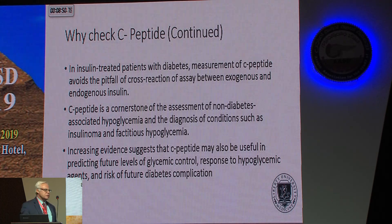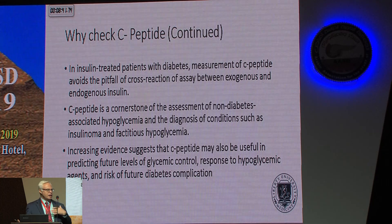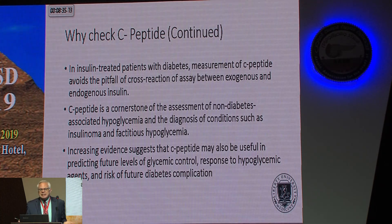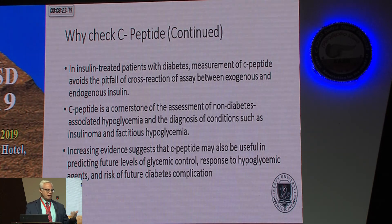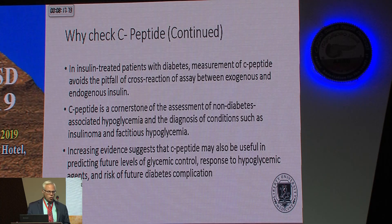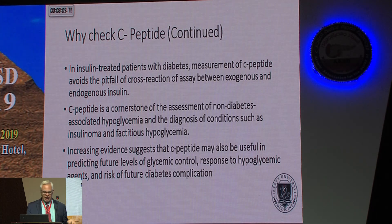In insulin-treated patients, if you're giving them insulin and you measure insulin levels, you can't tell if it's the injected insulin or natural insulin. You can measure C-peptide to differentiate endogenous from exogenous insulin. We can also check this when someone has hypoglycemia — is it because they have an insulinoma, or are they giving themselves insulin to fake it? With an insulinoma you'd expect low glucose, high insulin, and high C-peptide. Low glucose, high insulin, but low C-peptide — you have to scratch your head, because maybe someone is giving them insulin.